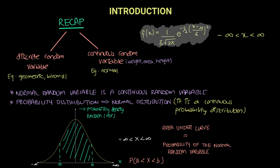Won't it be too complicated if we constantly have to integrate this equation and apply limits — for example, integrating from a to b — to get the probability? So what mathematicians have done to make this simpler is they have formed a table with pre-computed probabilities. All you need to do is figure out the standard normal variables in order to find the corresponding probabilities. I will be showing you this table in the next video.